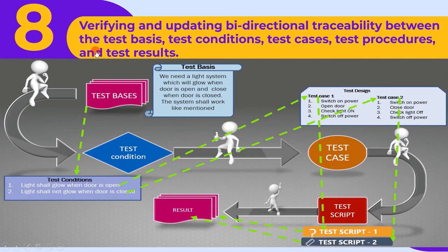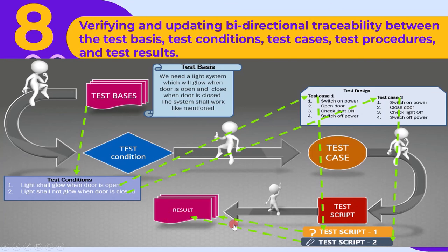The eighth main activity is verifying and updating bi-directional traceability between the test basis, test conditions, test cases, test procedures, and test results. In the test execution stage, we get test results for the low-level test cases. Therefore, at this stage we link test reports with test scripts, establishing bi-directional traceability between the test basis, test conditions, test cases, test procedures, and test results.